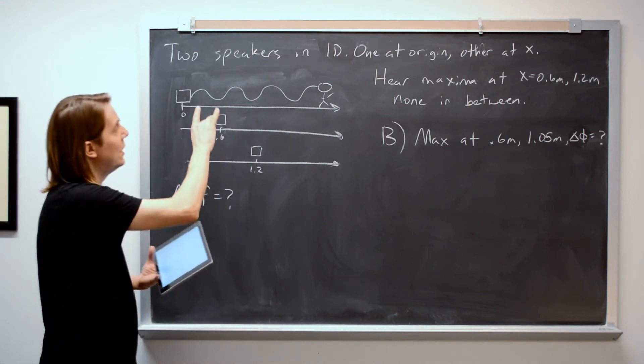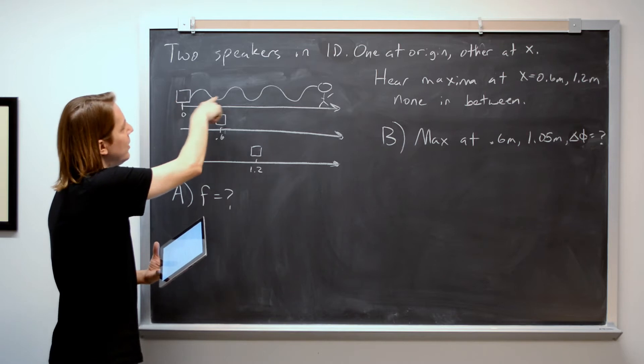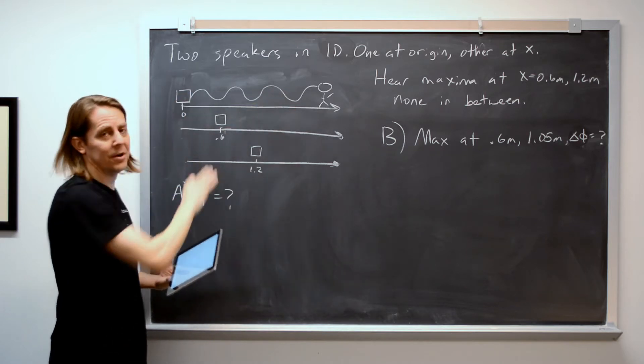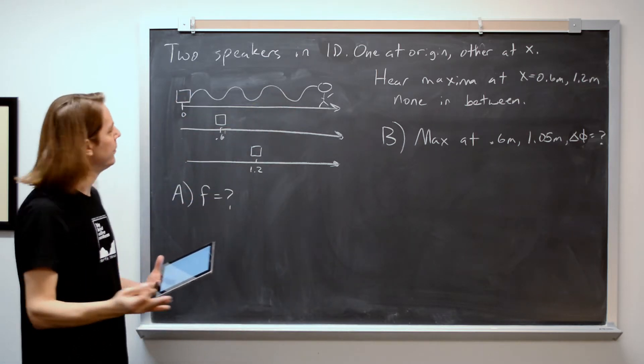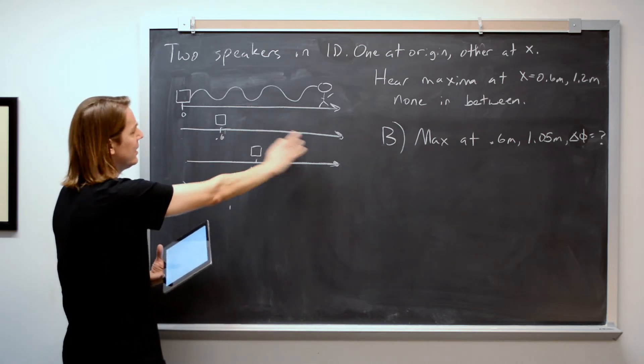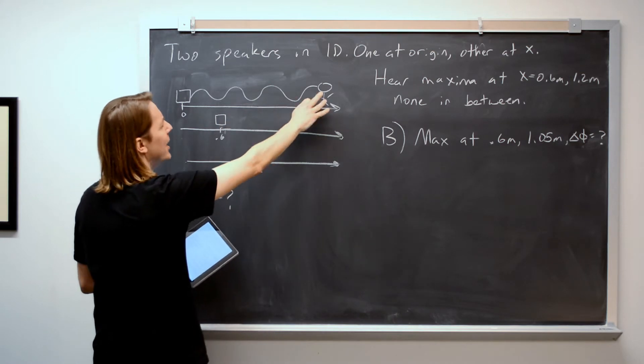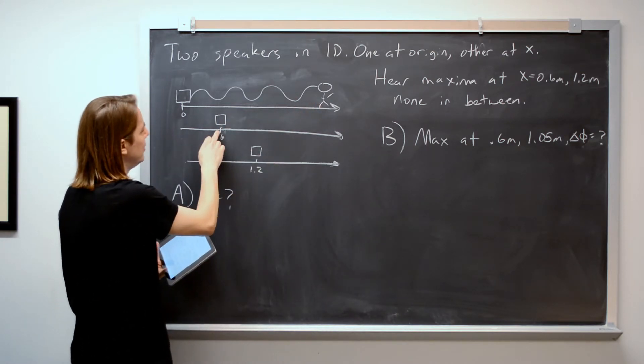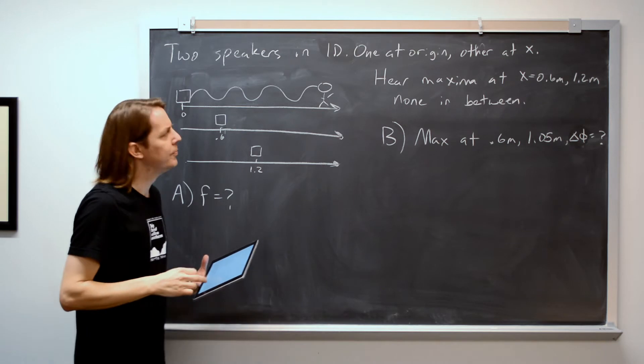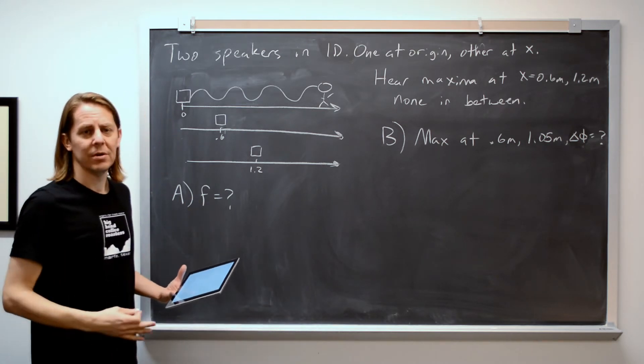Here we've got two speakers in one dimension. One sits at the origin and emits sound waves, so here's a snapshot of the sound wave at say t equals zero. And the other speaker can move along the x-axis, and as you move it along you hear maxima, you hear loud sound when it's at 0.6 meters and when it's at 1.2 meters. And the question is in that situation, what is the frequency of the sound?